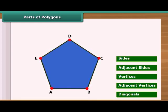The end points of the same side of polygons are called adjacent vertices. For example, A and B, B and C, C and D, D and E, E and A are adjacent vertices.